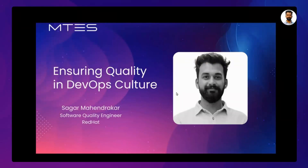My name is Sagar Mahindakar and I am from India. I hold a bachelor's degree and currently working with Red Hat. I have almost five years of experience in a quality engineer role. I am mostly responsible for the task of a project, involvement in sprint planning and releases. I also automate test cases and integrate them with the CI/CD pipeline to make sure that our product is bug free.